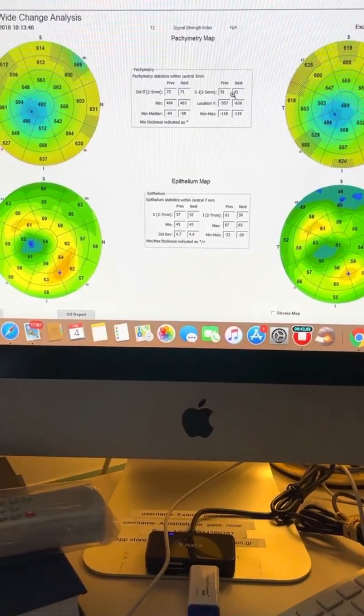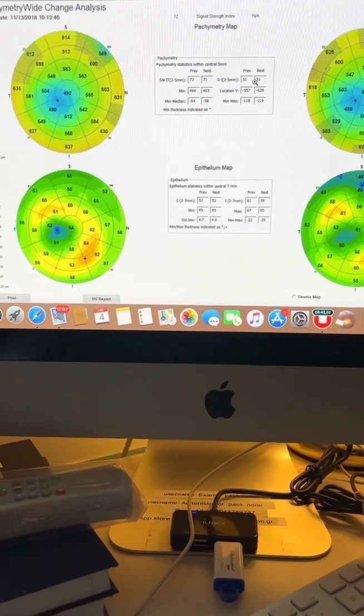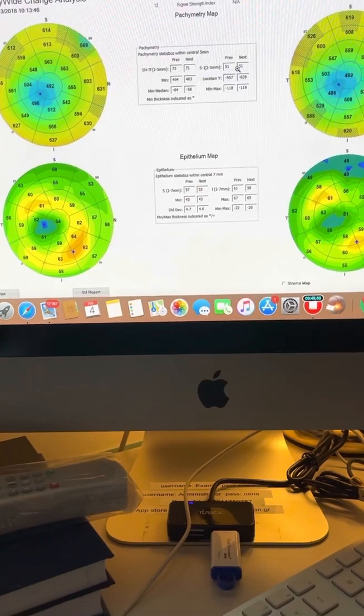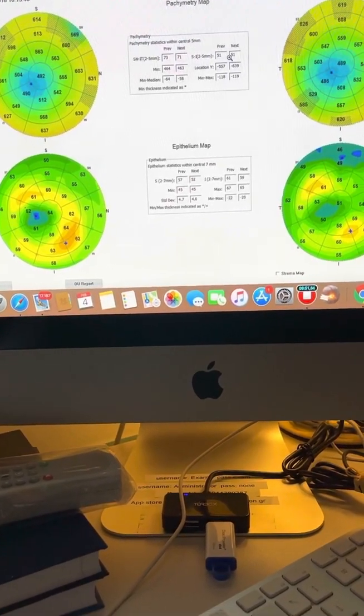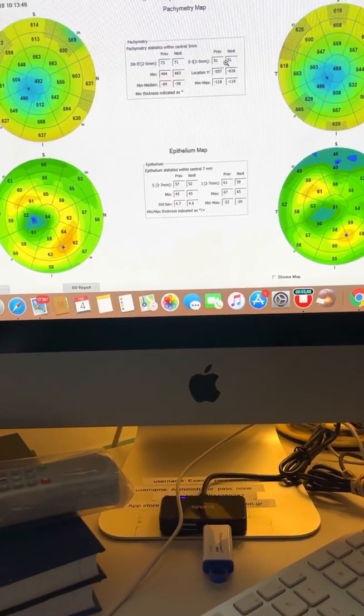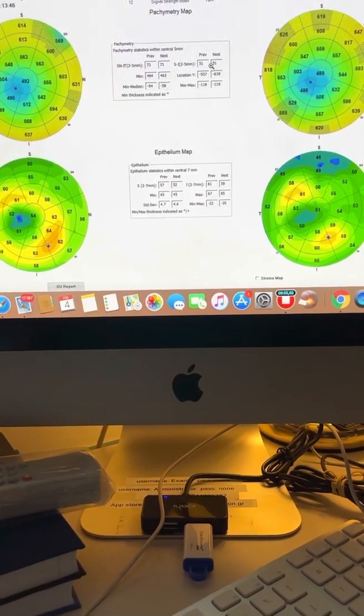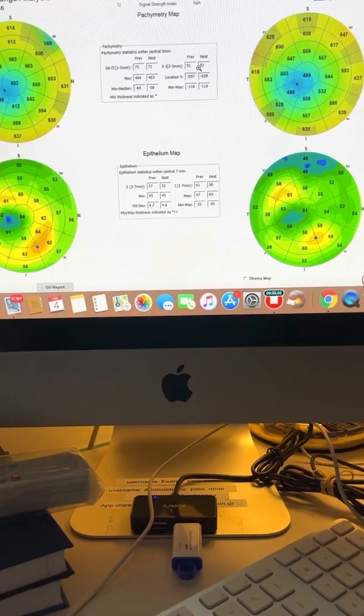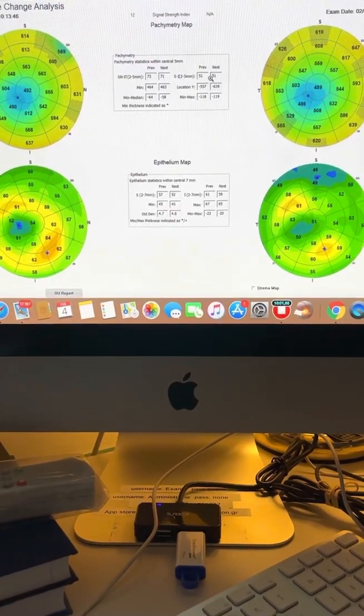And this is for us a point where the OCT, total cornea and epithelial mapping, helps us explain some findings in cornea tomography that could, if evaluated alone, create a little bit of concern for the keratoconus. Thanks so much for your attention.